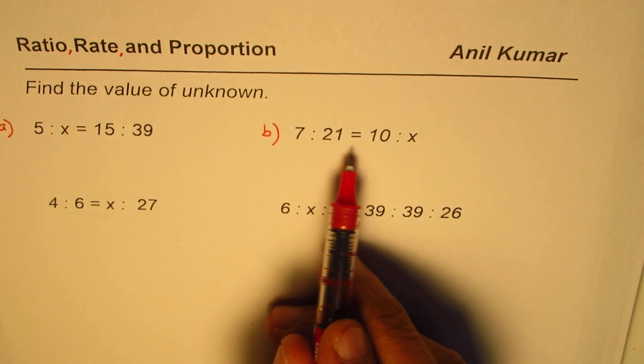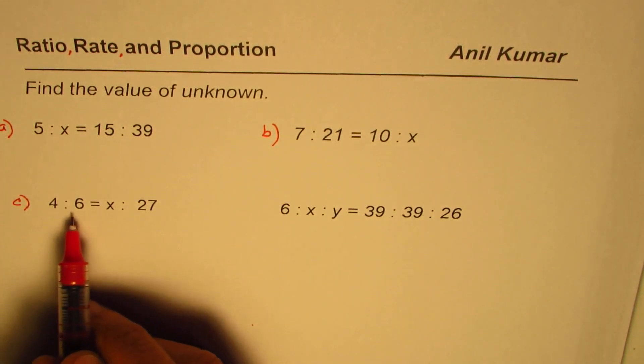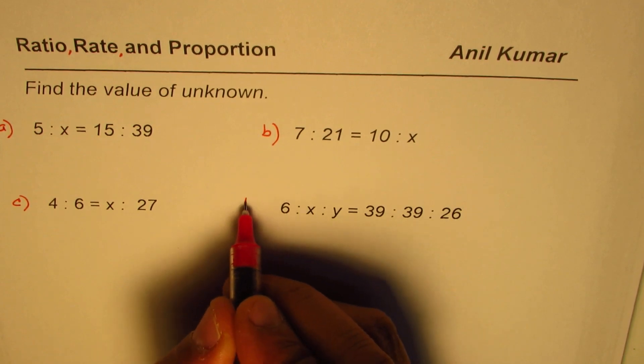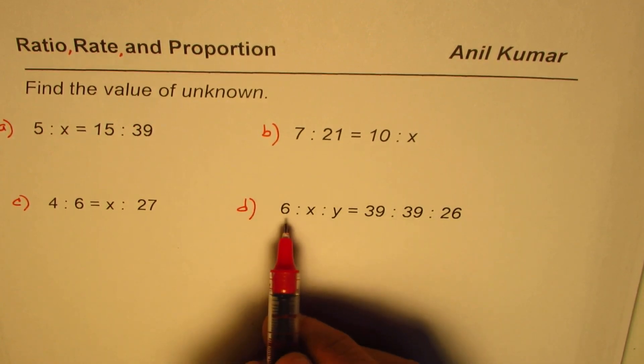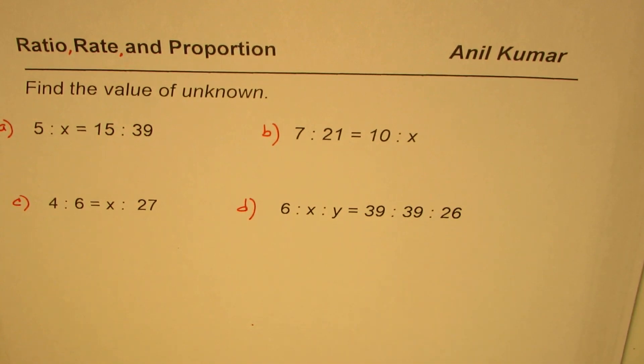...is 7 is to 21 equals to 10 is to x. And then c is 4 is to 6 equals to x is to 27. And part d is 6 is to x is to y equals to 39 is to 39 is to 26. You can pause the video, answer the questions, and then look into my suggestion.